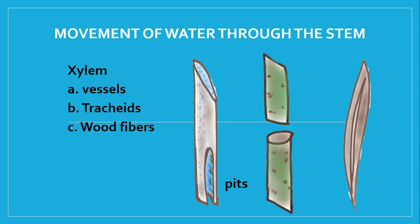Vessels are like a pipeline or straw that carries water to different parts of the plant. We also have tracheids, which are similar to vessels but with a smaller diameter and have pits at each end. These pits are areas where water quickly enters and exits. Vessels and tracheids in the xylem are useful in the conduction of water and dissolved minerals. Wood fibers or xylem fibers provide mechanical support to the xylem and to the whole plant.